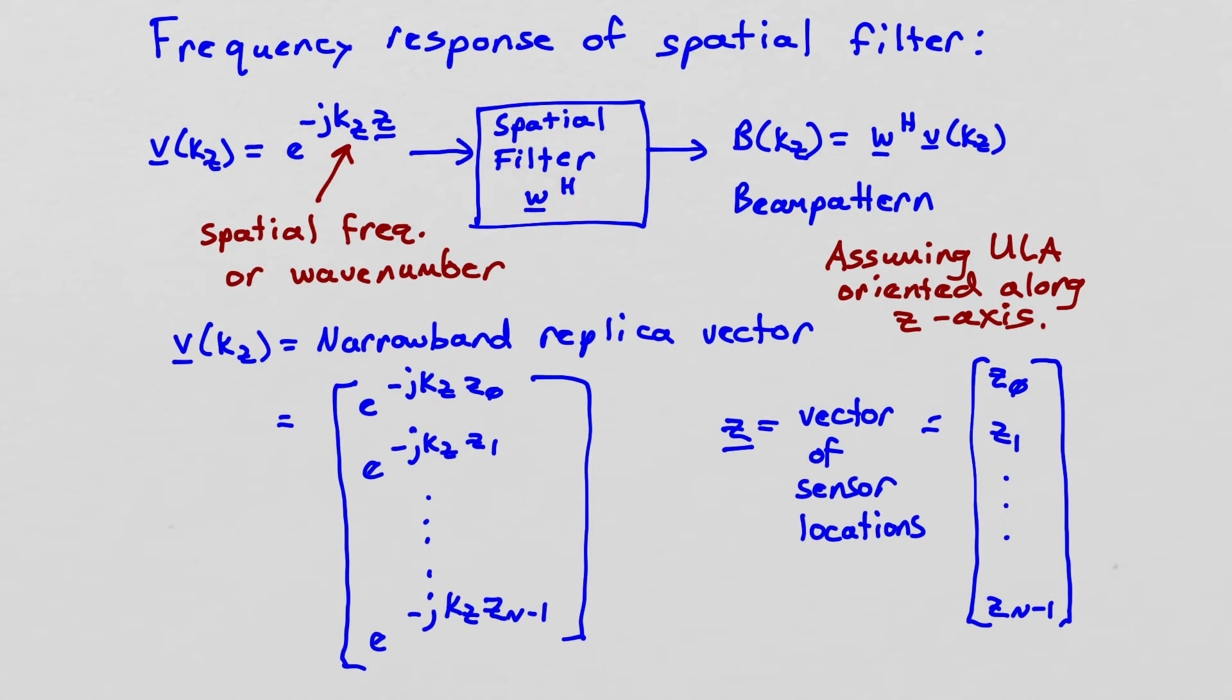What comes out of the spatial filter is simply w Hermitian v of kz, because that's how we compute the output of our spatial filter. And that tells us the gain that gets applied. So we call that gain the spatial frequency response or the beam pattern. So we're going to call it b of kz, because it can be different for each value of the spatial frequency input. So I can measure this by putting in different exponentials. And then I measure the beam pattern as a function of kz as the output.